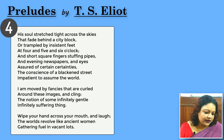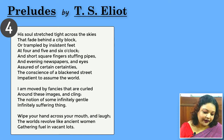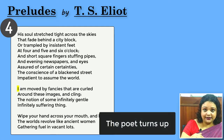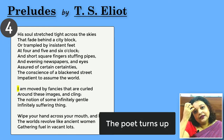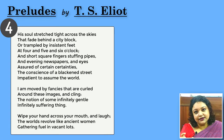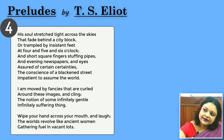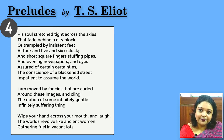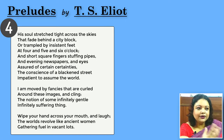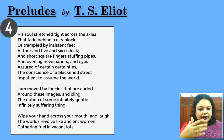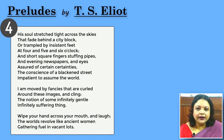'I am moved by fancies that are curled around these images, and cling the notion of some infinitely gentle, infinitely suffering thing.' The first person pronoun 'I' finally brings us to the poet. He says that these images are like his access to understand what is wrong with the world — people walking, collecting newspaper, horse stamping, that woman waking up in a sordid mood — all these images, this evening light and gloominess, trigger in him a conclusion.